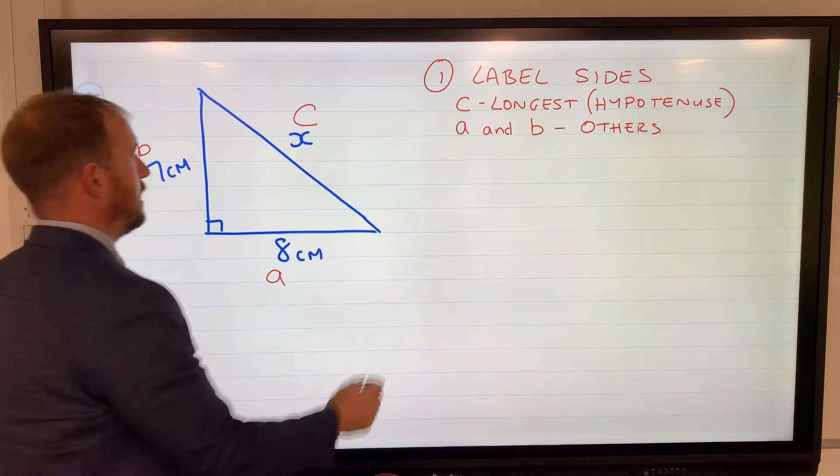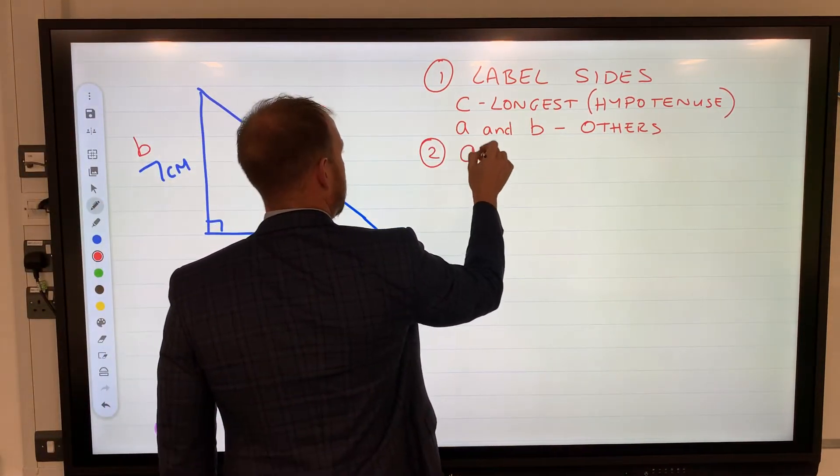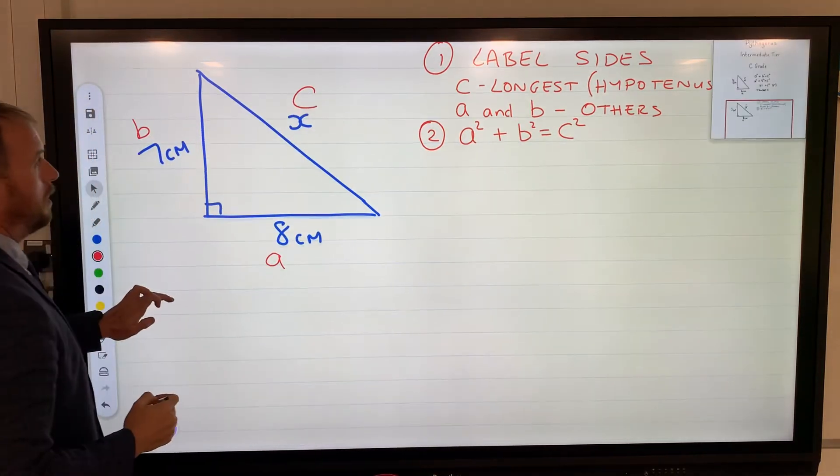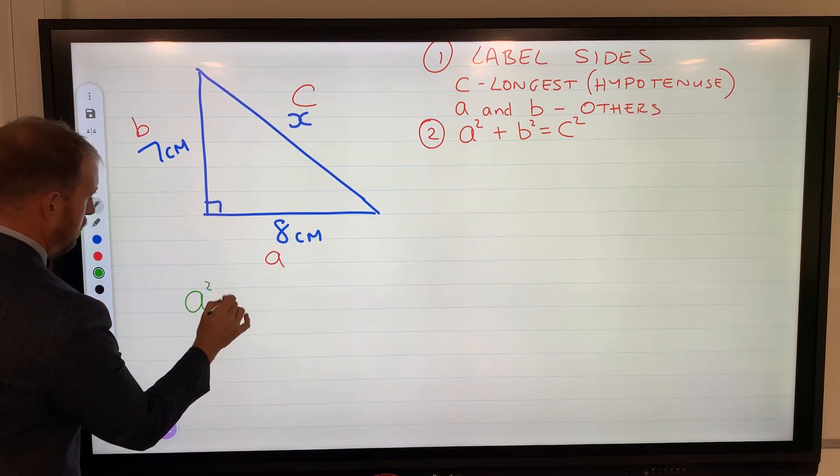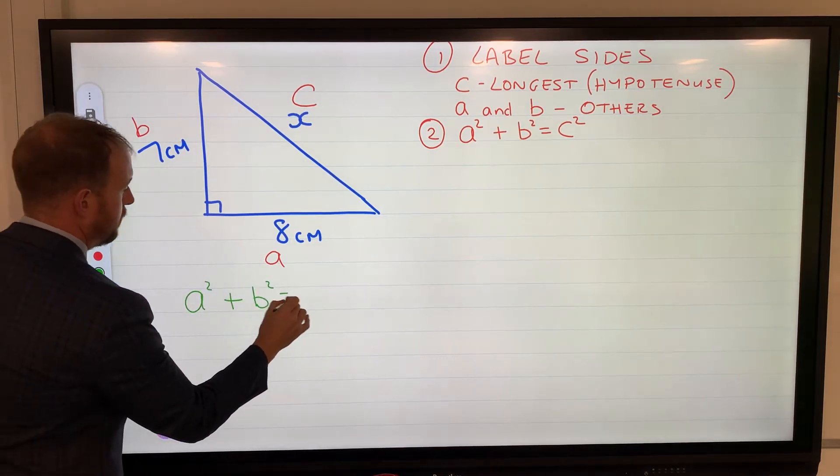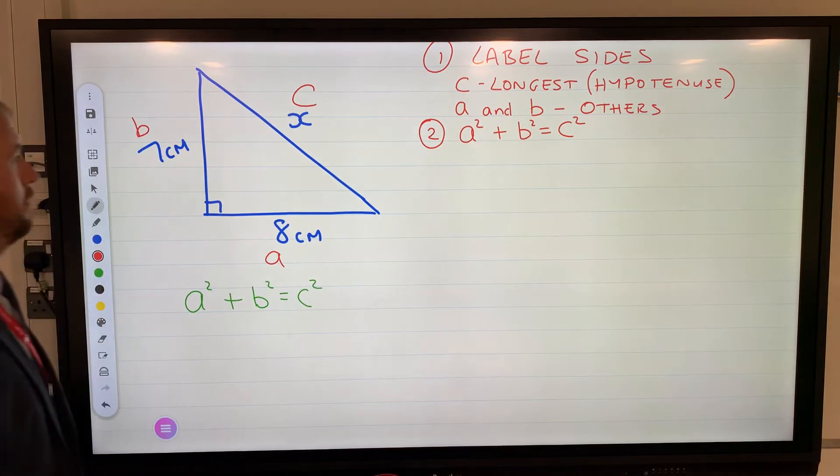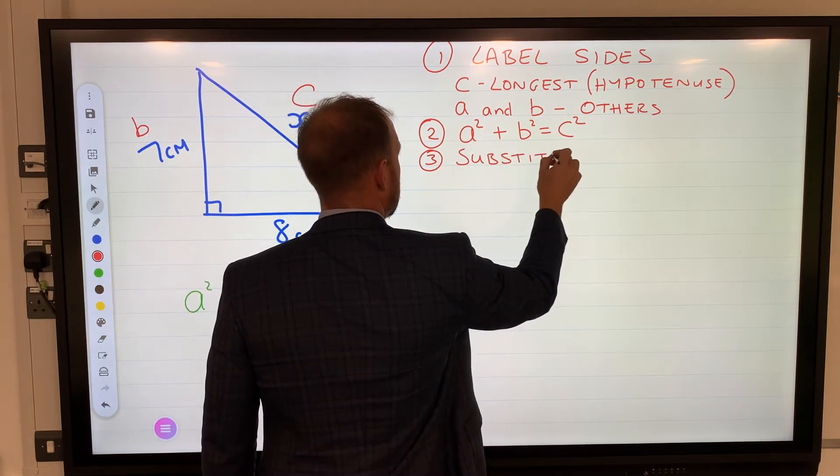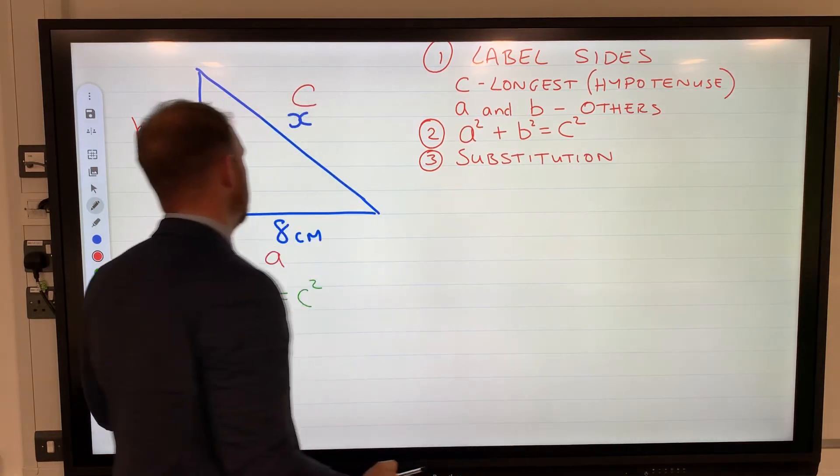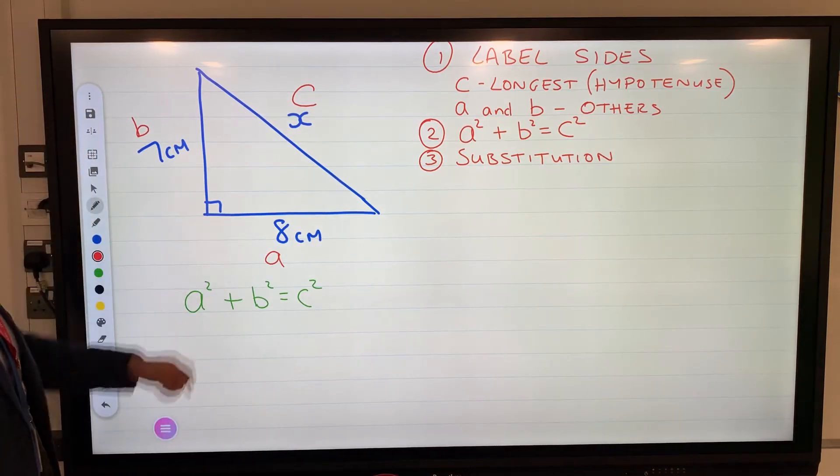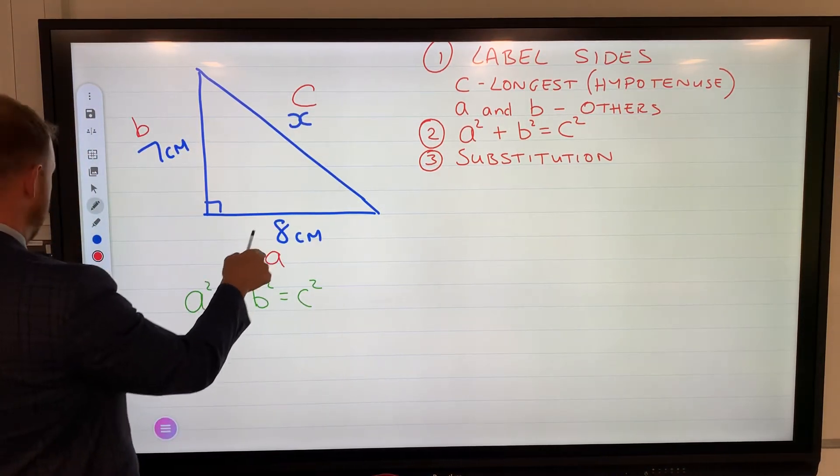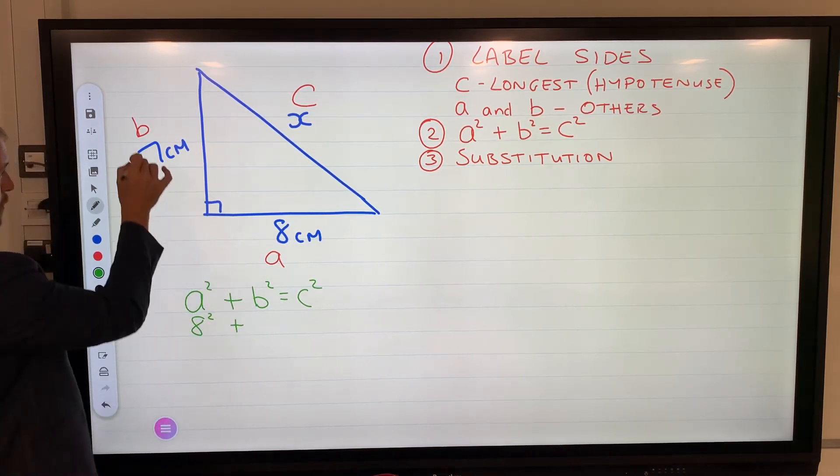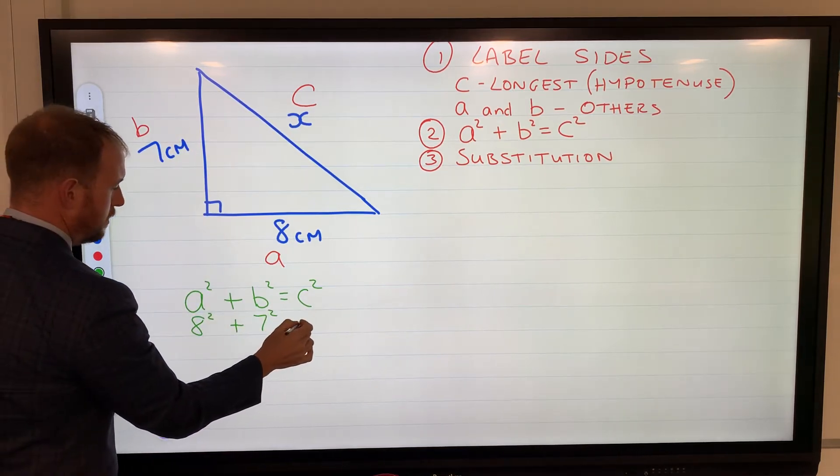Label sides. Second step is our formula: a squared plus b squared equals c squared. Third step is substitution, which means replace the letters with the values. We've labeled these, so a is 8, so 8 squared, b is 7, so 7 squared equals c squared.